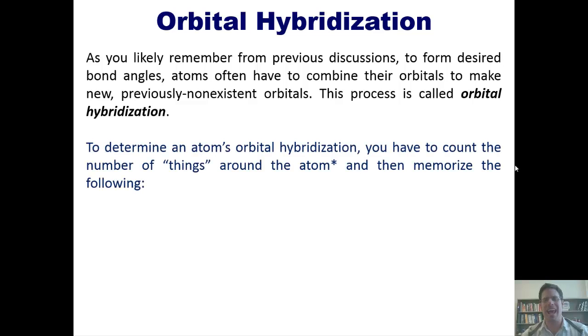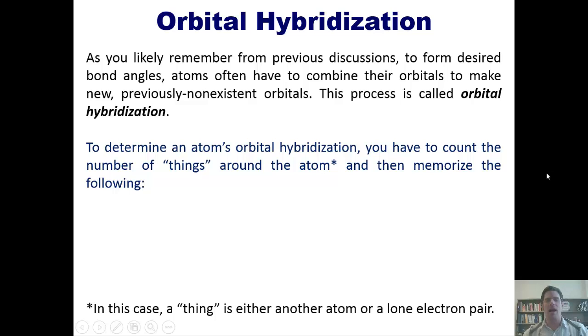Now, to determine an atom's orbital hybridization, you have to count the number of things around that atom, and by things I mean either another atom or a lone electron pair, and then memorize the following. If you have a central atom that has two things around it, its hybridization is sp. If you have a central atom that has three things around it, its hybridization is sp2. If you have a central atom that has four things around it, its hybridization is sp3.